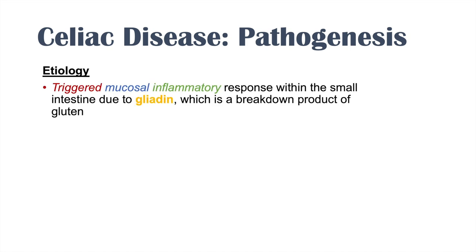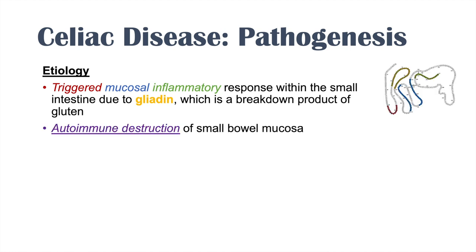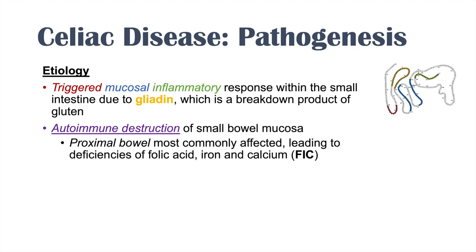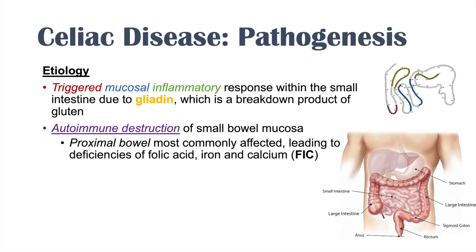The pathogenesis of celiac disease involves a triggered mucosal inflammatory response within the small intestine due to gliadin, which is a breakdown product of gluten. So while gluten is responsible, it's actually the breakdown product of gluten — gliadin — that triggers the response. This autoimmune destruction of the small bowel mucosa usually occurs in the proximal bowel most often. The proximal bowel — the duodenum —